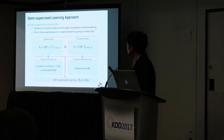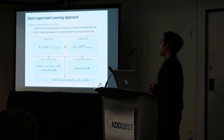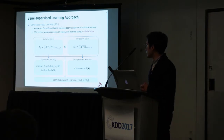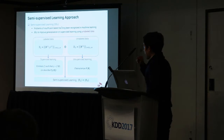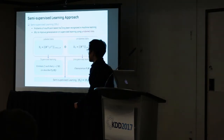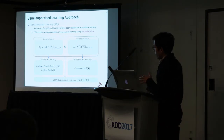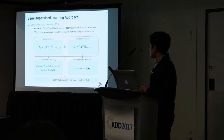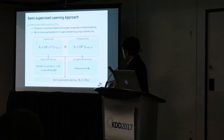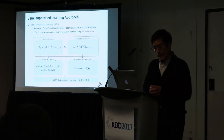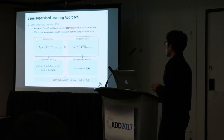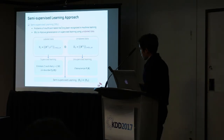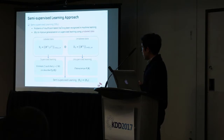This can be viewed as a problem of insufficient labels. This problem has long been recognized in machine learning, and people have developed semi-supervised learning techniques to improve generalization on supervised learning using unlabeled data. Supervised learning relies on labeled data to estimate a function relating input and output. Unsupervised learning relies on unlabeled data to characterize the probability distribution of the input. Semi-supervised learning relies on both labeled and unlabeled data, and is used when unlabeled data is much larger than labeled data.